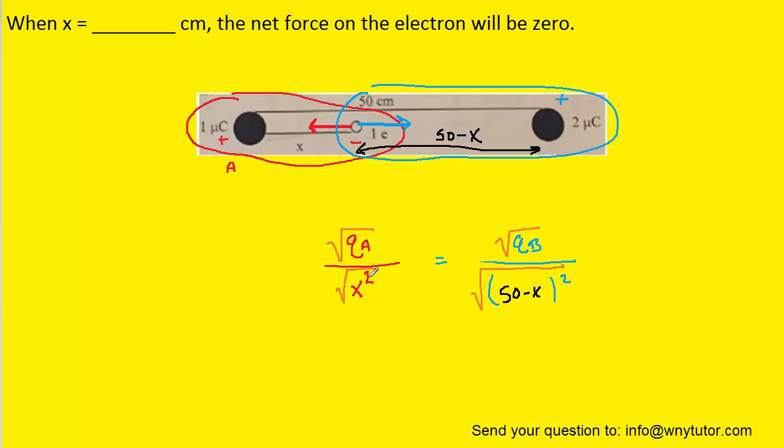And when we take the square root of x squared, that's just going to become x. And when we take the square root of the quantity 50 minus x squared, then the square root and the squaring will cancel, leaving just 50 minus x.